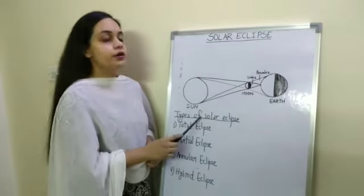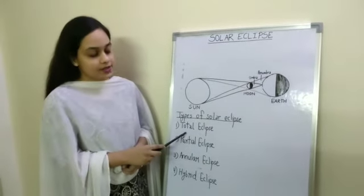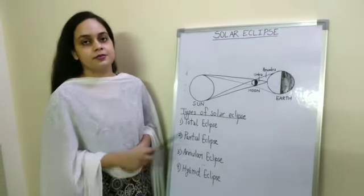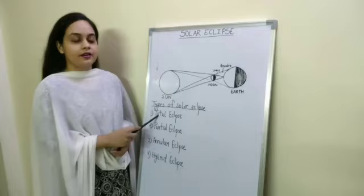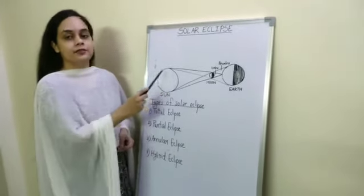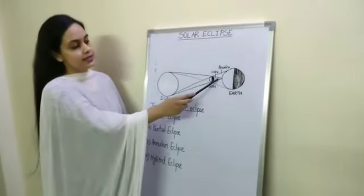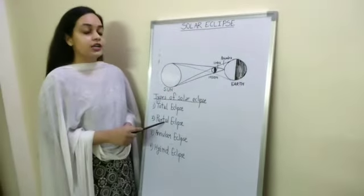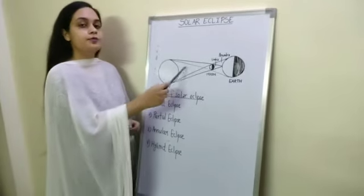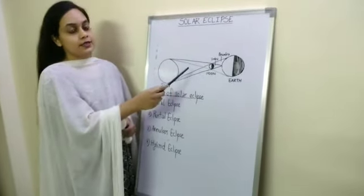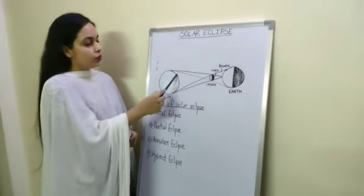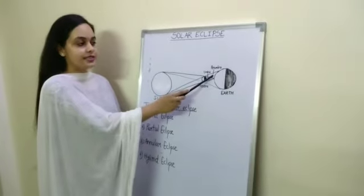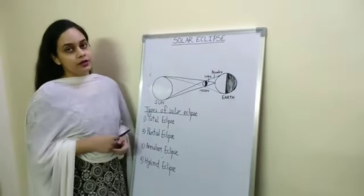There are a total of four types of solar eclipses: total eclipse, partial eclipse, annular eclipse, and hybrid eclipse. A total eclipse occurs when the moon completely covers the sun, and it can only be seen in the Umbra portion of the shadow of the moon. A partial eclipse occurs when the moon passes in front of the sun off-centred, meaning it covers only some part of the sun, not completely, and a partial eclipse can be seen in the Penumbra portion of the surface of the earth.